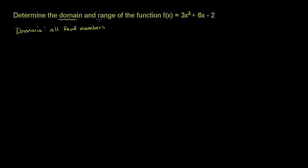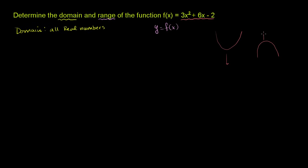Now the range — the set of possible outputs of this function, or if we set y equals f of x on a graph, it's the set of all possible y values. To get a sense of this, I'm going to try to graph this function. If you're familiar with quadratics — and that's what this function is — it has a parabolic shape. An upward-opening parabola won't take on any values below its vertex. So let's try to graph this and get a sense of its vertex.